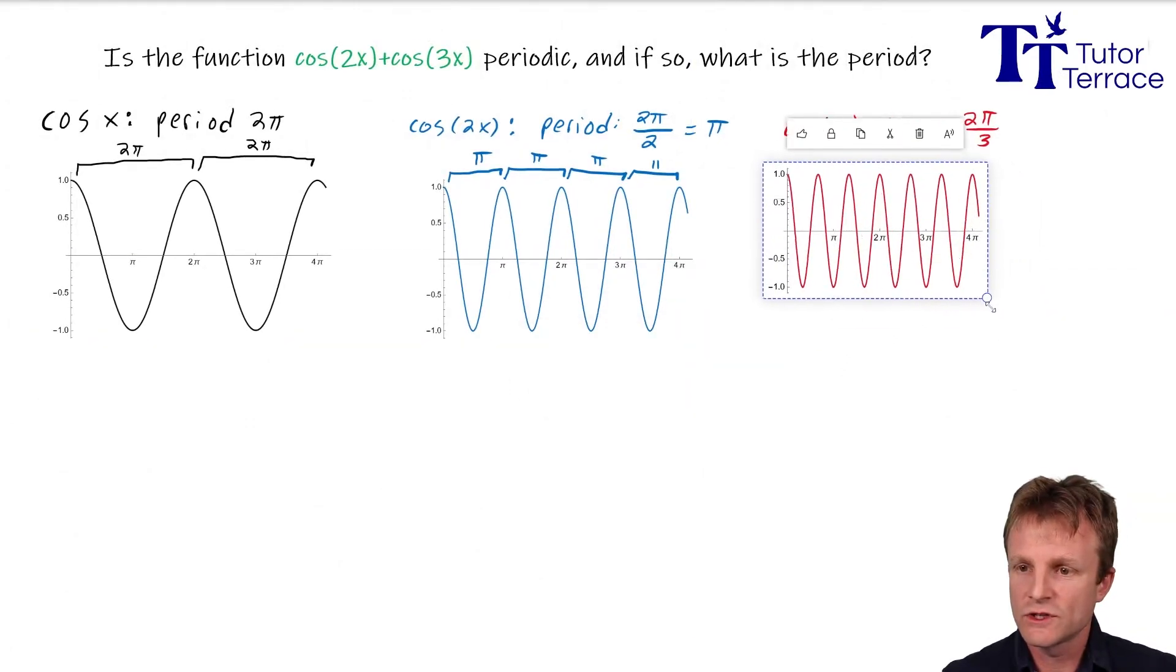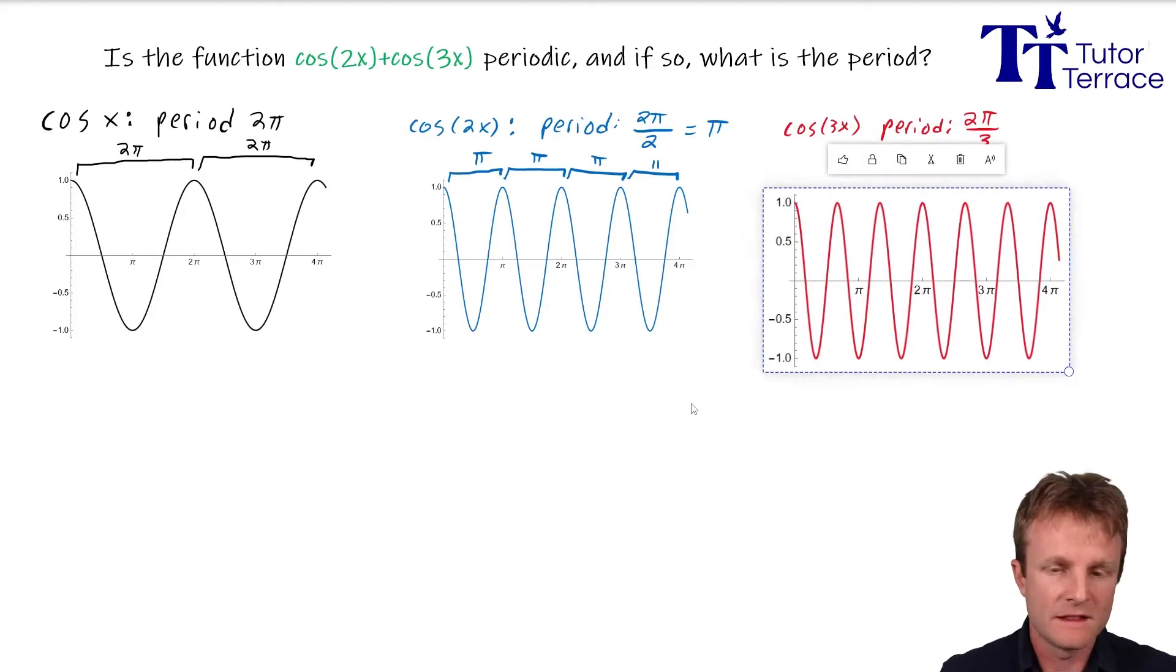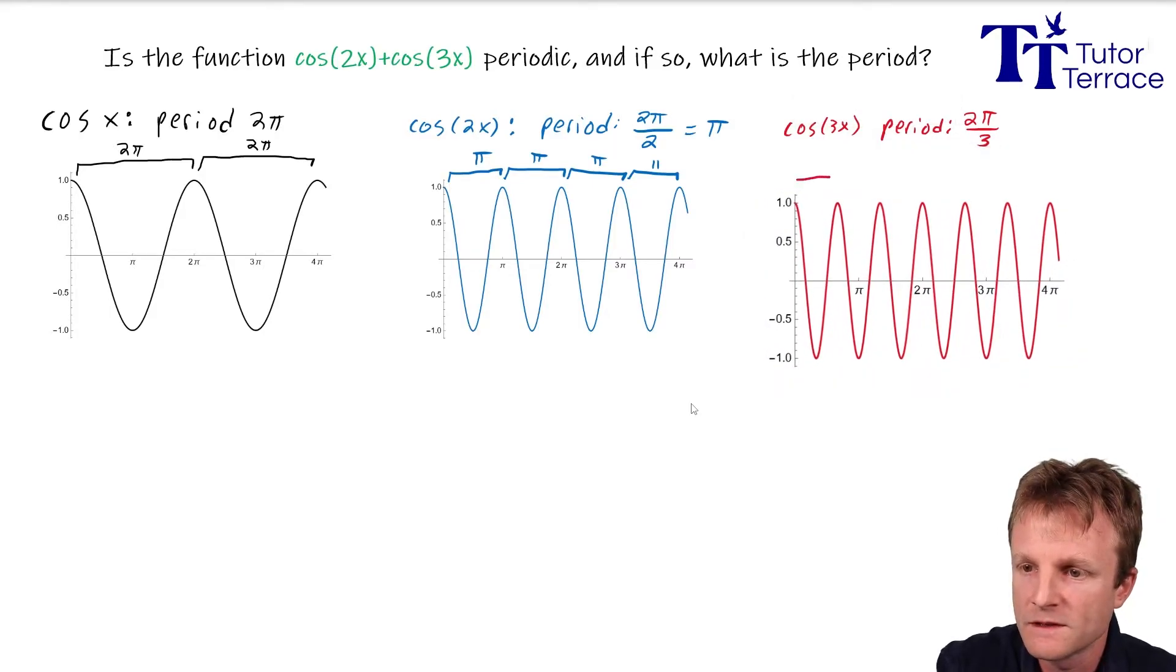And then we can see what the plot looks like. It's the same function, just squished even more. And let's draw on a few more lines here for the period of 2π over 3, 2π over 3, etc.